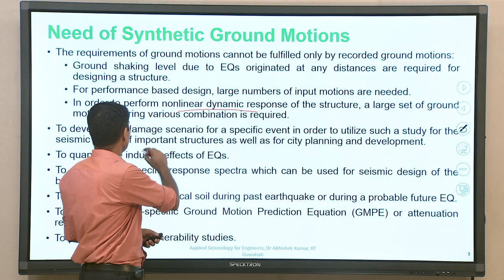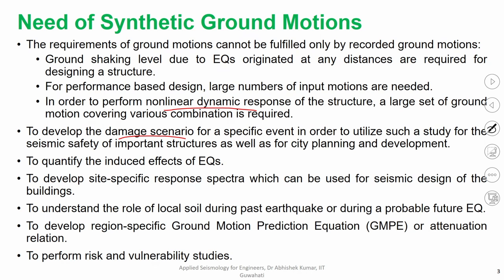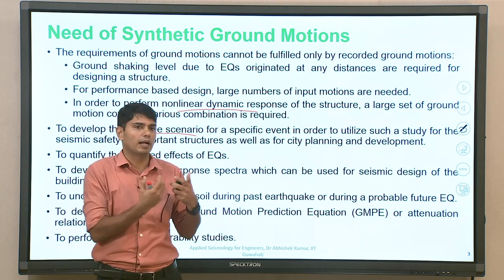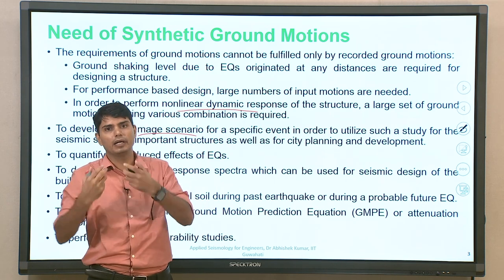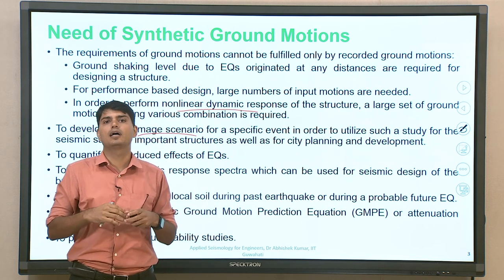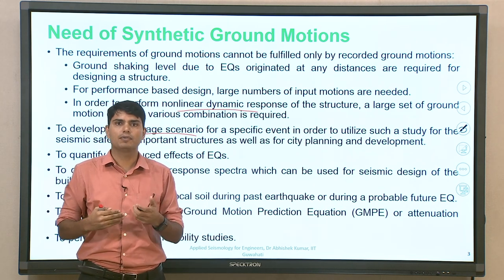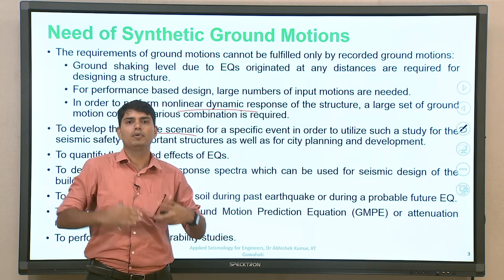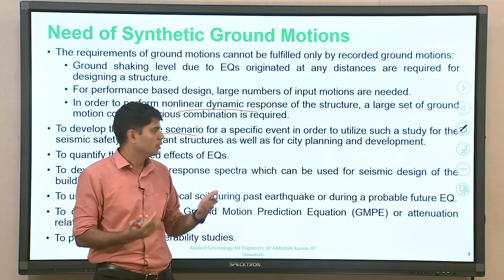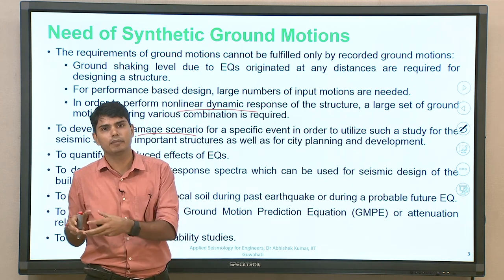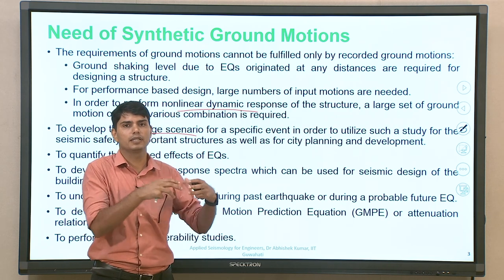In order to further understand damage scenarios — as many times we discuss about smart cities — damage scenario means taking into account what is the potential region expected to undergo more damages, primarily because of ground vibration, building type, or induced effects. If going with smart city planning, we can take this into account well in advance before actual execution starts. This will help in identifying potential regions which are lesser or more prone to earthquake and its induced damages.